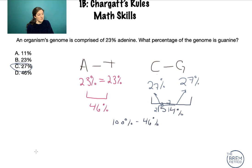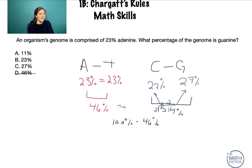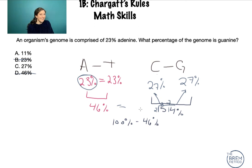If you're running out of time on the MCAT, use process of elimination. It's definitely not 46%, because we know we need half of 54. It's not 23% either — there's no way for guanine to have the same percentage as adenine unless all bases were exactly 25%. That leaves 27 and 11, and since half of 54 is clearly greater than 11%, you can make rounding judgments without completing all the math.